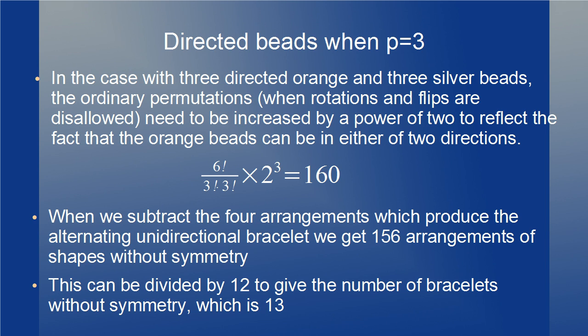In the case of directed orange beads and 3 silver beads, the ordinary permutations (when rotations and flips are disallowed) must be increased by a factor of 2 to the third power to reflect the fact that each of the orange beads can independently point in either of two directions. So we multiply by 2³ and get 160. When we subtract the four arrangements that produce the alternating unidirectional bracelet, we get 156 arrangements of bracelets without symmetry. This divides evenly by 12 to give 13 bracelets without symmetry.